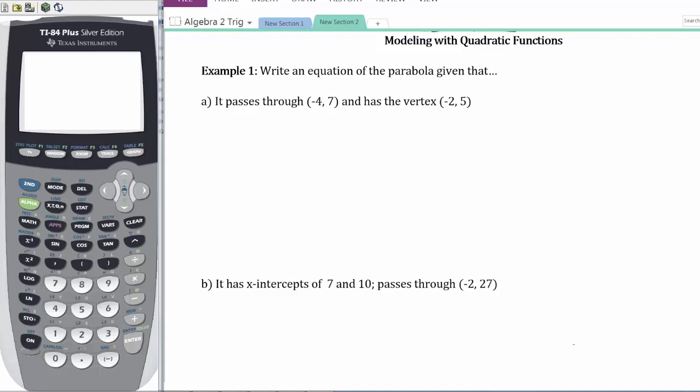Hi everybody, today's lesson is about modeling with quadratic functions. In example one we're going to write the equation of the parabola given that it passes through the point (-4, 7) and has the vertex (-2, 5).